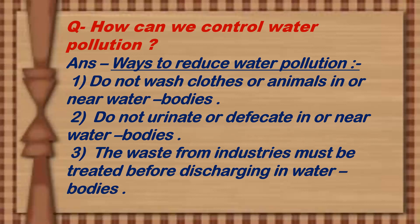Number 3: The waste from industries must be treated before discharging into water bodies. Removing chemicals from used water is very necessary. Those chemicals should be treated first, and then that water should be discharged into the water bodies.